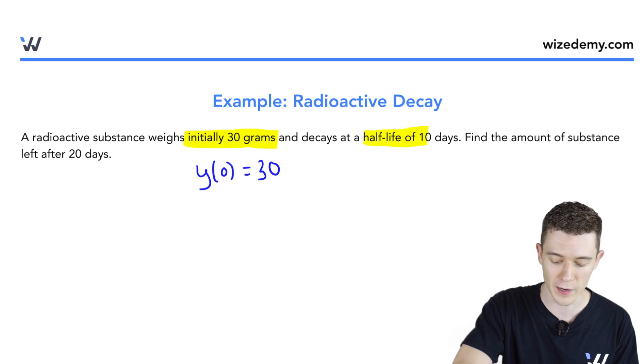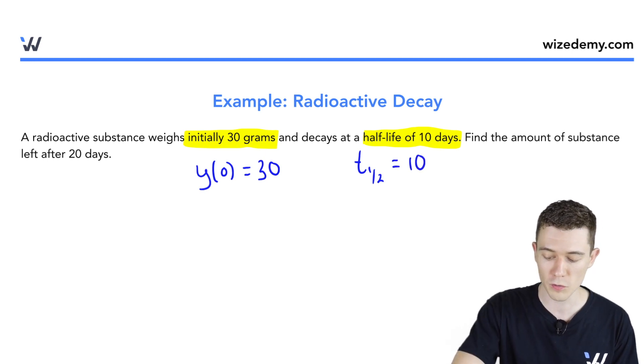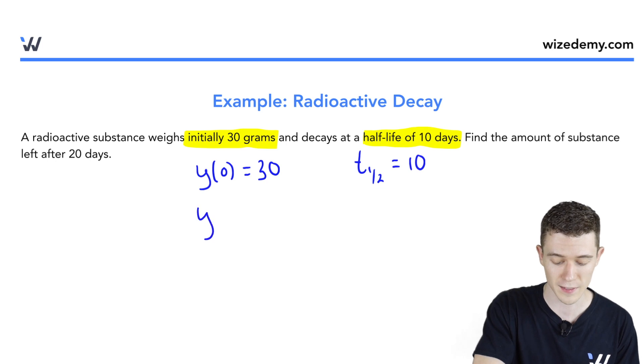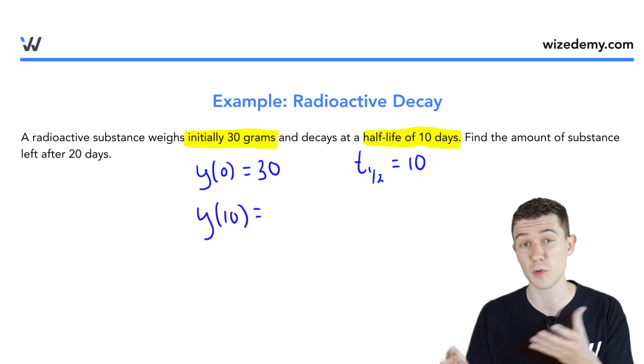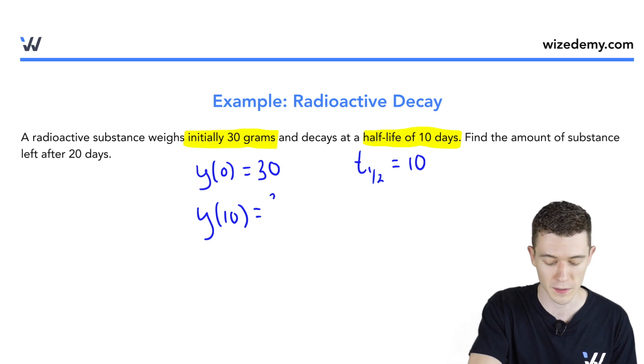We're also given the half-life of 10 days. You can use that notation t sub 1/2 equals 10 here, or you can write what this means in terms of our function: if we substitute the value of 10 into our function, we should be left with half the original substance, 30 over 2, or 15.